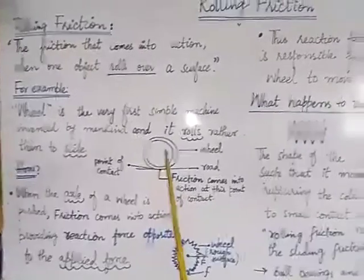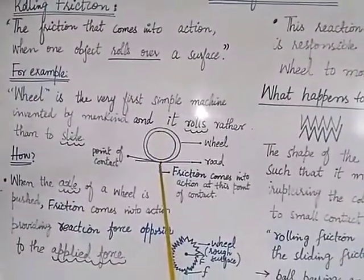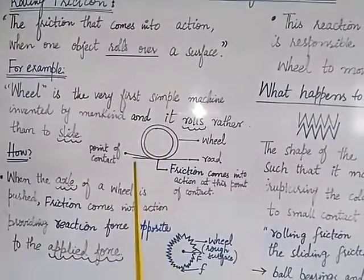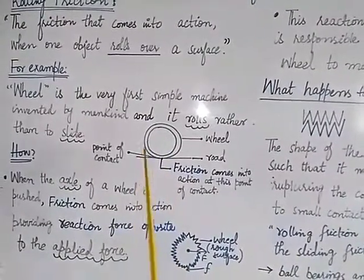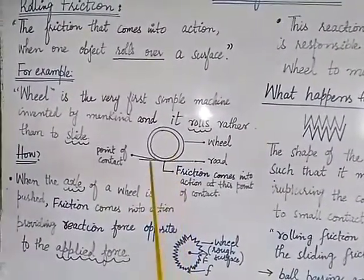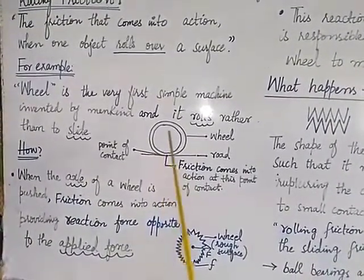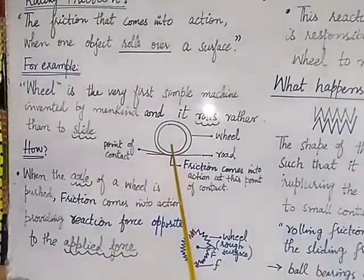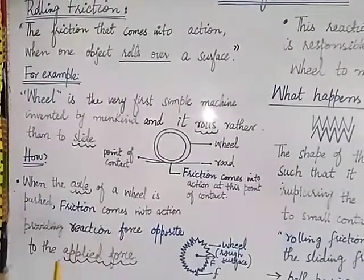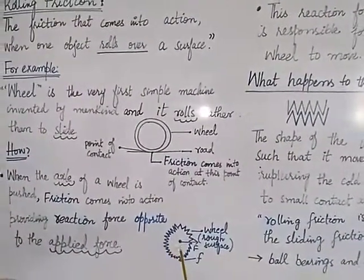Look at this figure. We have a wheel and road, and this is the point of contact between the wheel and the road. When the wheel moves, friction at this point of contact comes into action and this friction force provides a reaction force opposite to the applied force, which is responsible for the movement of the wheel.